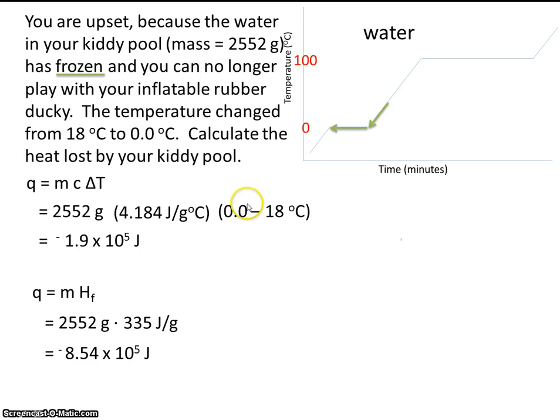Two things are happening. The pool starts at 18 degrees. As it cools to 0, it gives off this much heat. And then when it's at 0, it continues to lose energy until it freezes. And as it loses energy when it freezes, it loses this much energy.